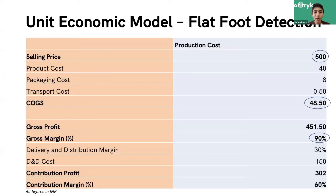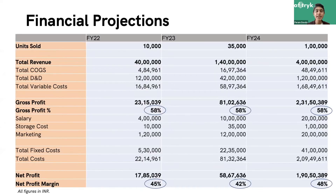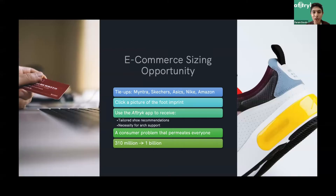Now for the financials: we have an ultra-low COGS of ₹48.50, a selling price of ₹500, and a gross margin of 90%. Over the next three years, we hope to sell 10,000 units in year one, going up to 1 lakh in year three, with 58% gross profit and net profit margins around 45%.